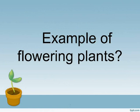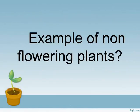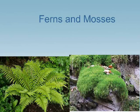Examples of flowering plants are rose, mango, and wheat. Examples of non-flowering plants are ferns and mosses.